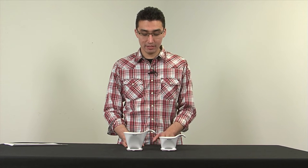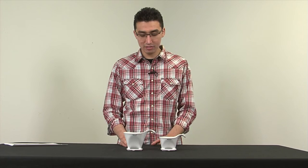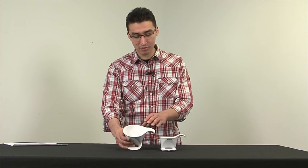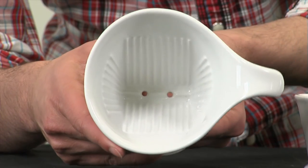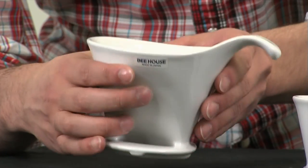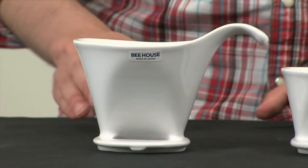The B-House Dripper employs a pour-over brewing method similar to the V60, but it's different in that instead of a spiral-shaped design, it has a wedge-shaped design with two holes on the bottom here.